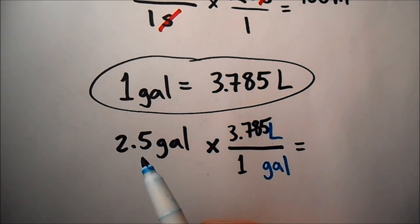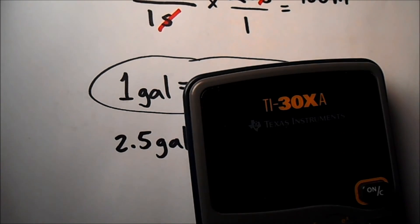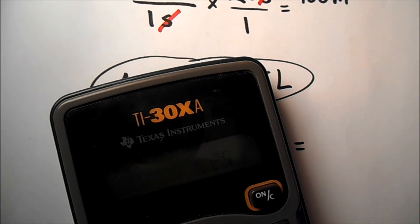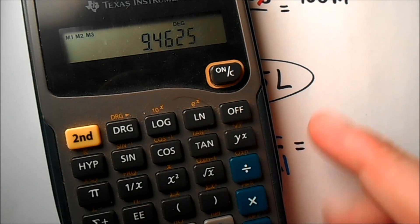We're limited by the least number of sig figs of all the measured values in our problem. That 1 is infinite so we don't count that, but this 2.5 definitely will help us determine it. So we're going to say 2.5 and we're going to multiply that by 3.785 to get our raw answer. 9.4625.